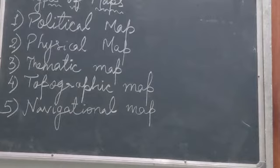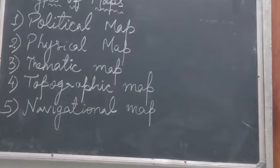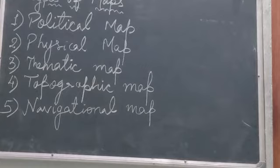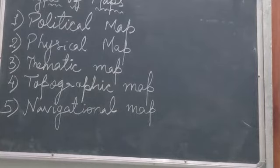The next one is about thematic map. A thematic map contains information about specific features like the climate of a particular area and distribution of minerals, crops, soils and population etc. A map which contains information of such specific features is known as a thematic map.